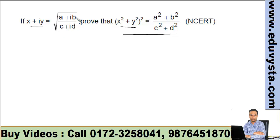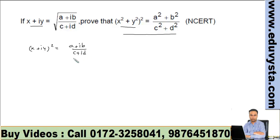But here we have a square root, so let's first remove the square root by squaring both sides. So we have (x + iy)² = (a + ib)/(c + id).